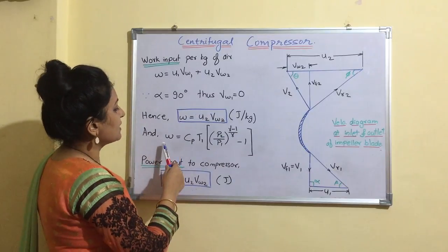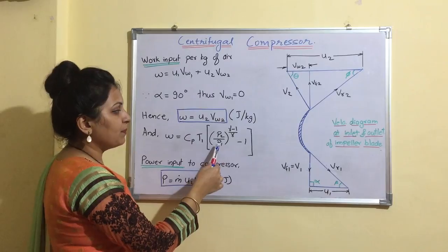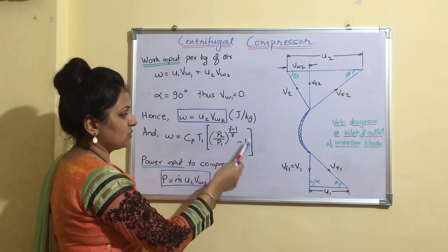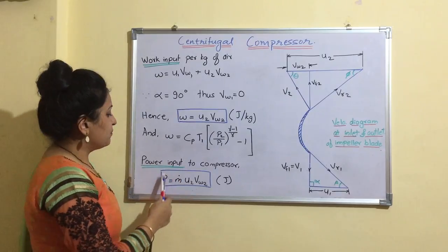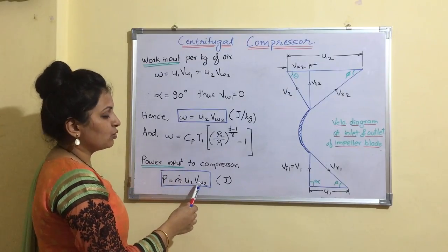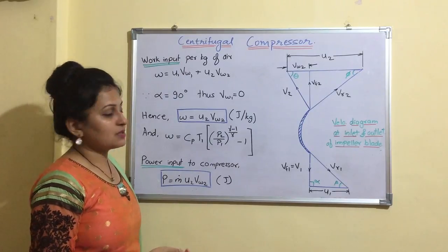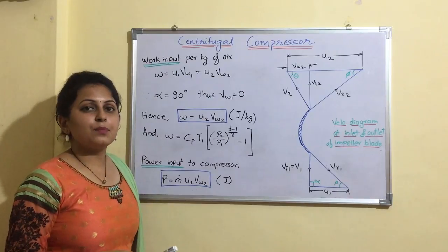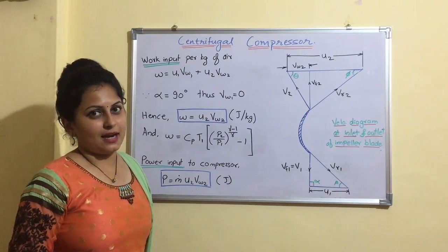Additionally, isentropic work can be expressed as Cp·T1·[(P2/P1)^((γ-1)/γ) - 1]. Power input is P = m-dot × U2·Vw2, where m-dot is mass flow rate in kg per second. These two formulas are very important when solving problems on velocity triangles.